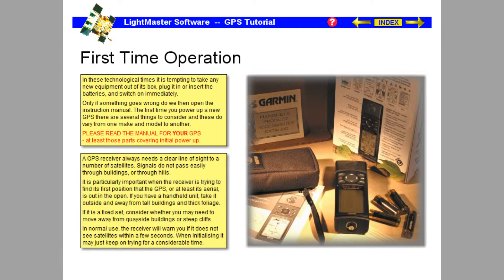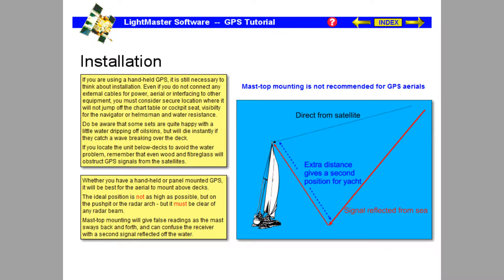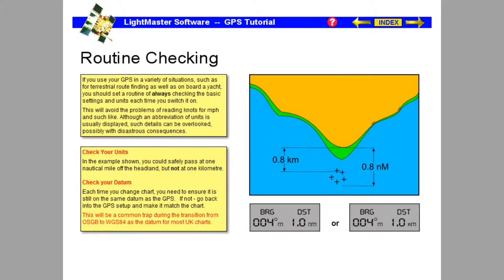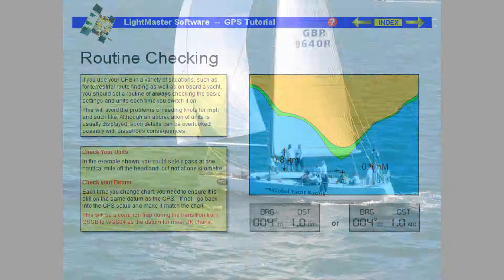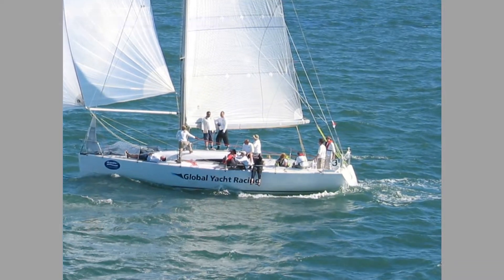When you first buy a GPS receiver, it is important to follow the right procedures, and set it up to match your preferences. The software guides you through the process, and deals with the installation and interfacing issues. The importance of routinely checking settings is highlighted, especially if different crew members will be using the equipment.